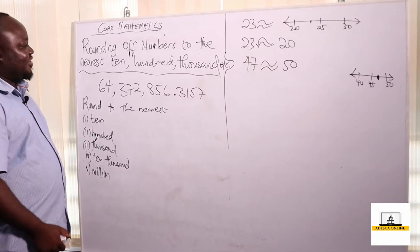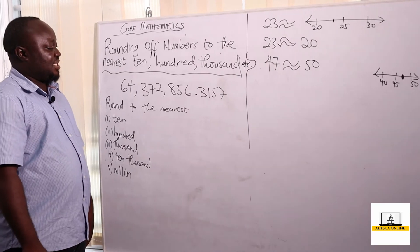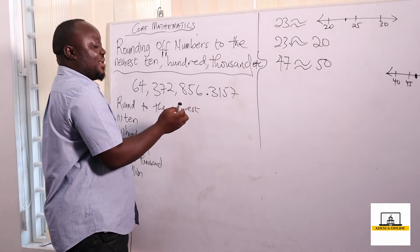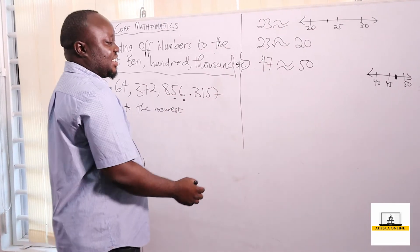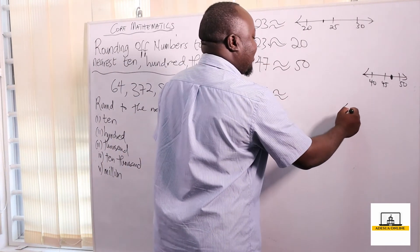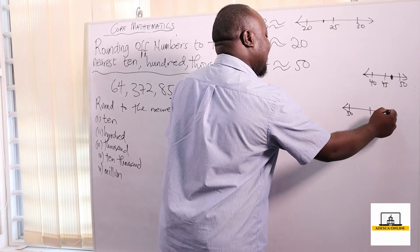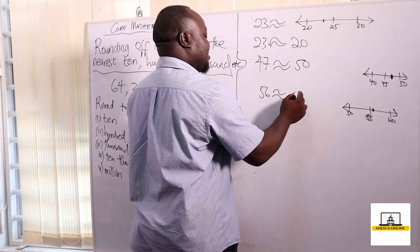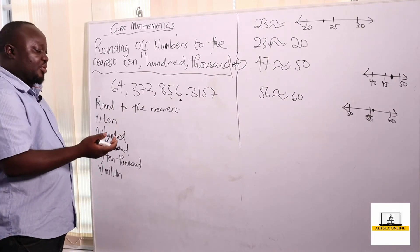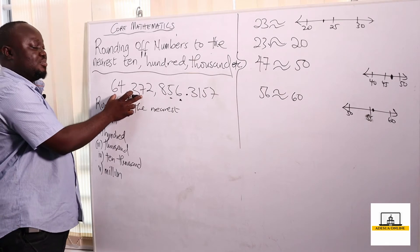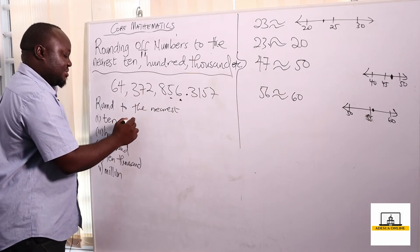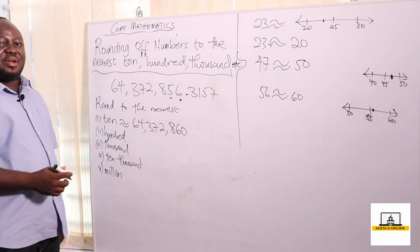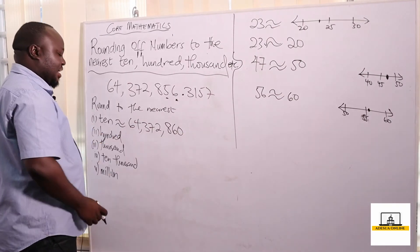Now, if I have sixty-four million three hundred and seventy-two thousand eight hundred and fifty-six and I want to round this to the nearest ten, I concentrate on the ones and tens digits, which is fifty-six. Fifty-six is between fifty and sixty; the middle is fifty-five, and fifty-six is above fifty-five, which is closer to sixty. So we don't change the rest of the number — to the nearest ten this becomes sixty-four million three hundred and seventy-two thousand eight hundred and sixty.